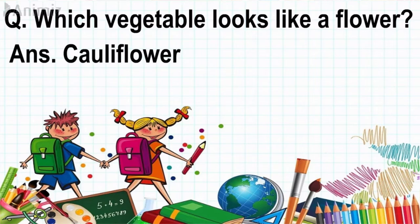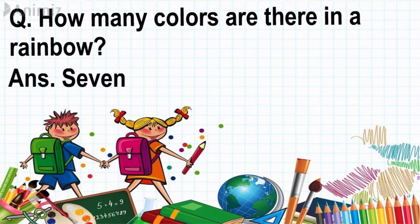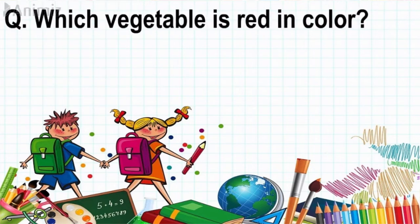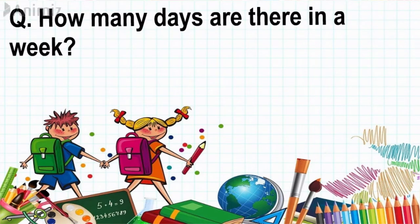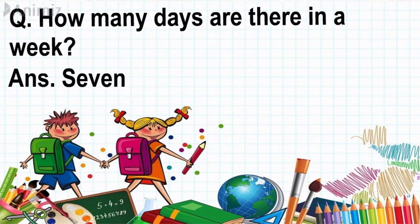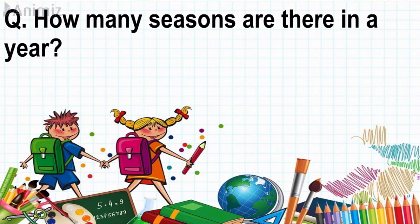Question: How many colors are there in a rainbow? Answer: Seven. Question: Which vegetable is red in color? Answer: Tomato. Question: How many days are there in a week? Answer: Seven. Question: How many seasons are there in a year?